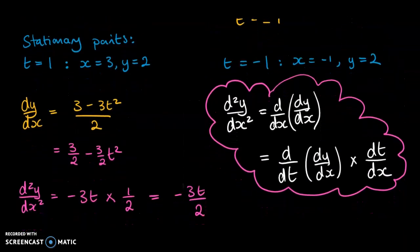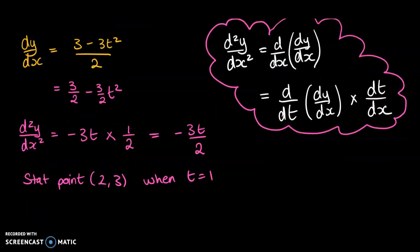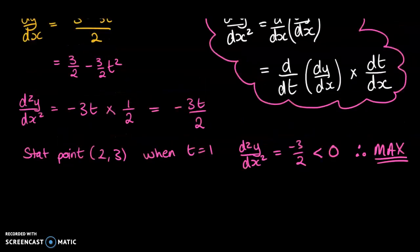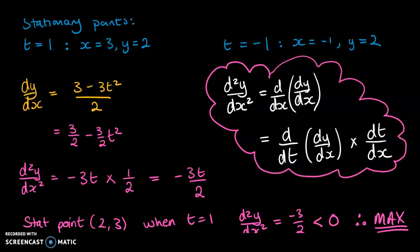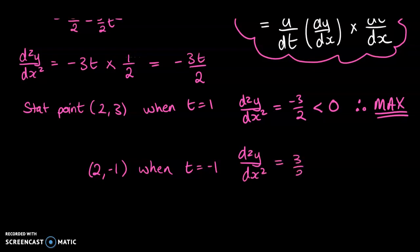For the stationary points: when t = 1 we have the stationary point (2, 3). Substituting t = 1 into d²y/dx², we get -3/2, which is less than 0, therefore we have a maximum. For the other stationary point at (2, -1), when t = -1, d²y/dx² equals 3/2, which is greater than 0, therefore that one is a minimum.